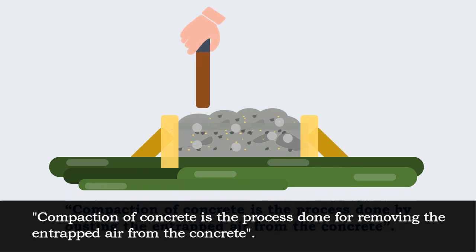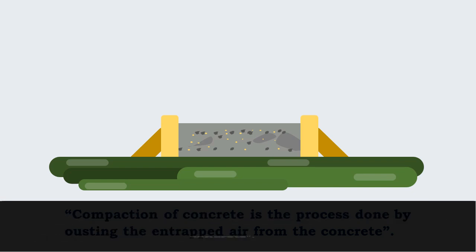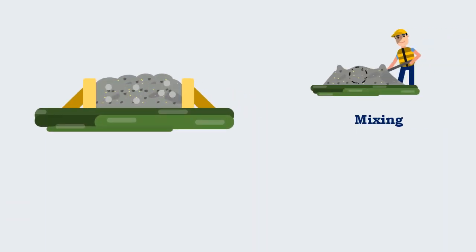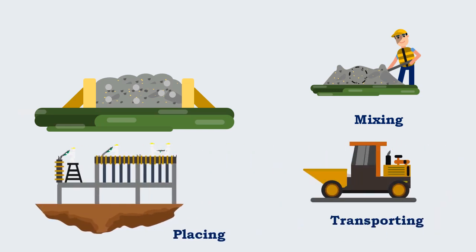Compaction of concrete is the process done for removing the entrapped air from the concrete. In the previous process of concrete production, such as mixing, transporting and placing of concrete, certain amount of air is likely to get entrapped in it.